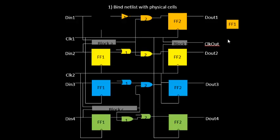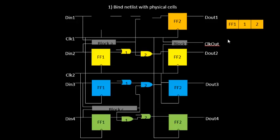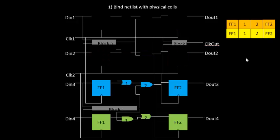Similarly, the inverter sitting in the center will also be taken out and given a shape. You can observe the difference in shape between the inverter in the netlist and the inverter used in a physical design flow. This is what binding means — taking cells from the netlist and giving them a physical shape and size. The same thing is done with the AND gate, FF2, and the other remaining logic cells.